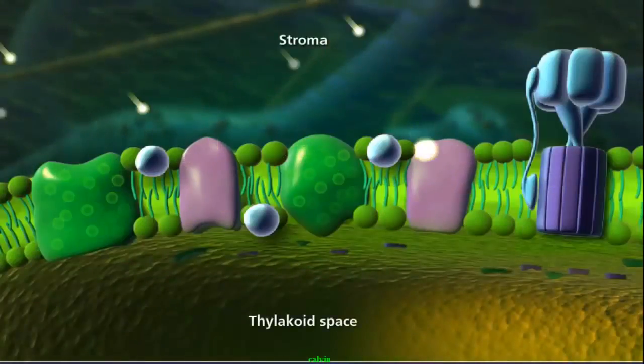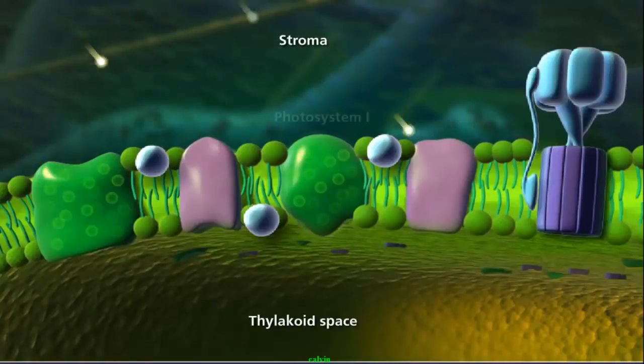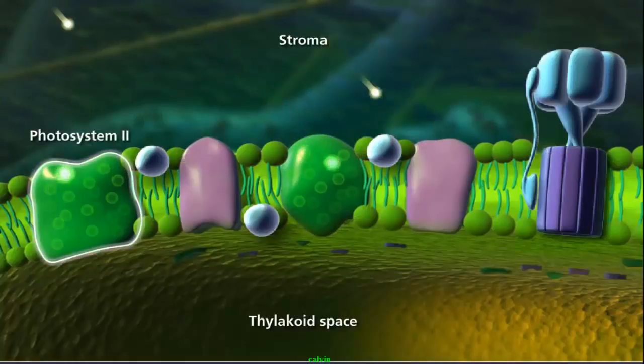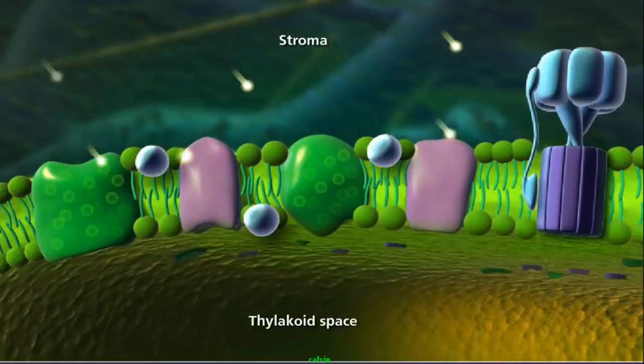In most photosynthetic organisms, thylakoids contain pairs of photosystems, called Photosystem I and Photosystem II, that work in tandem to produce the energy that will later be used in the stroma to manufacture sugars.